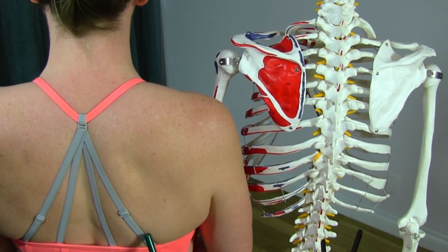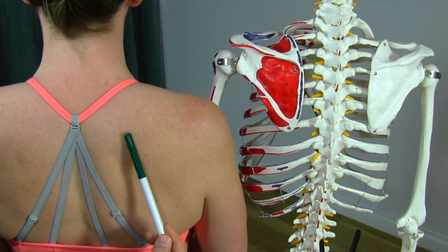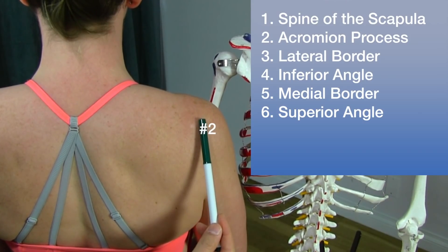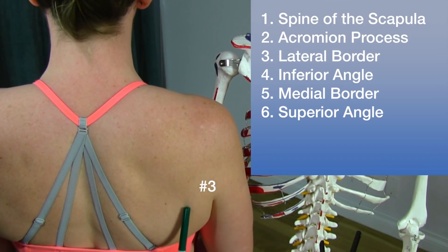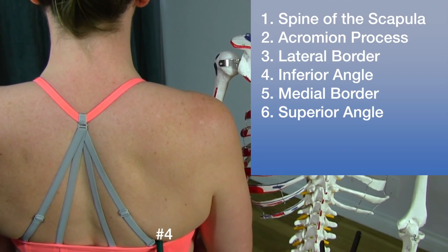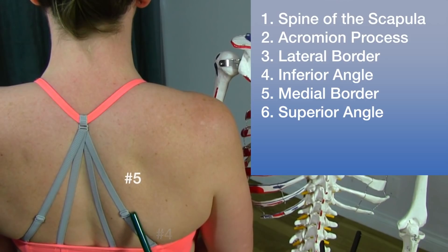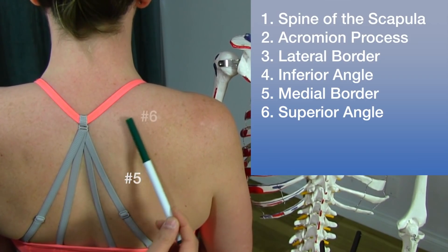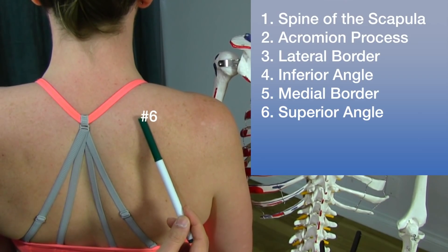If we visualize the scapula as a triangle here, we would see the spine of the scapula. Coming out laterally would be the acromion. The lateral border would be there, and the tip would be the inferior angle of the scapula. Coming up we have the medial border of the scapula, and at the top here would be the superior angle of the scapula.